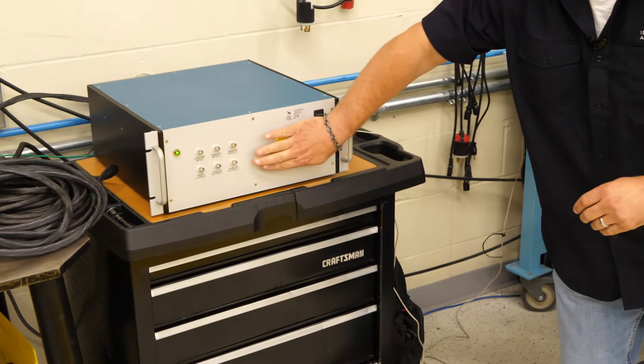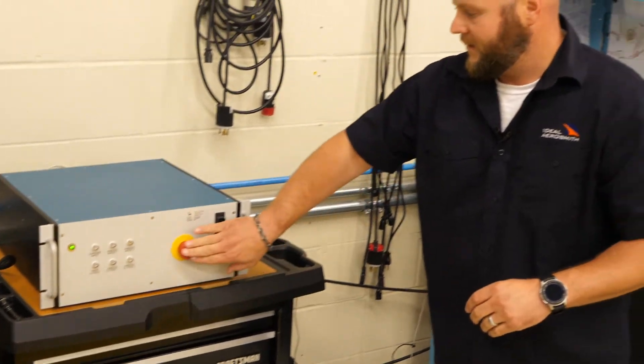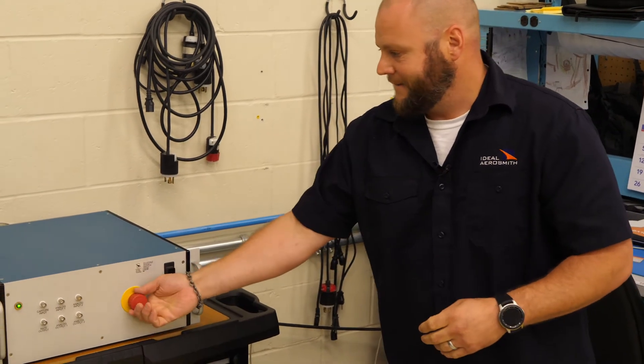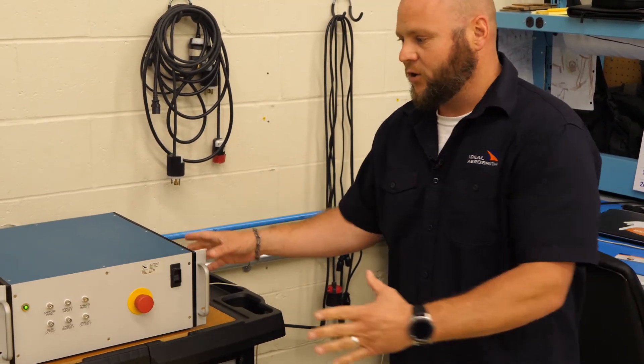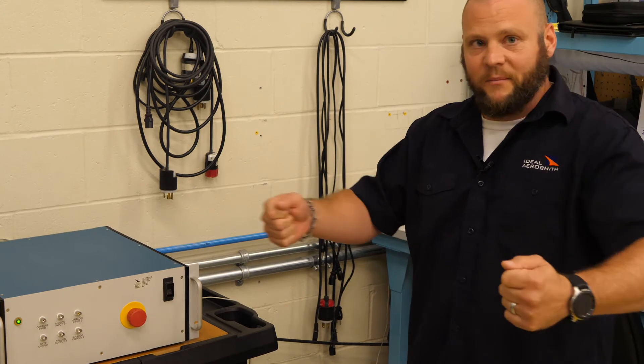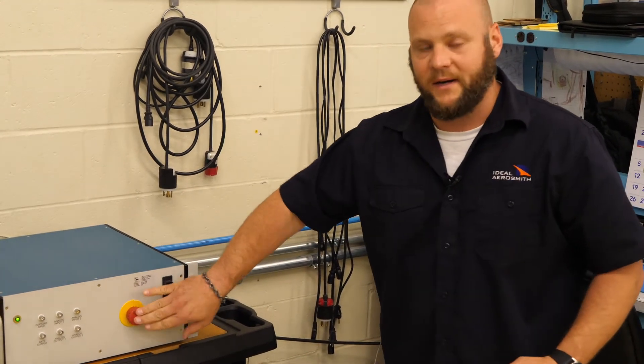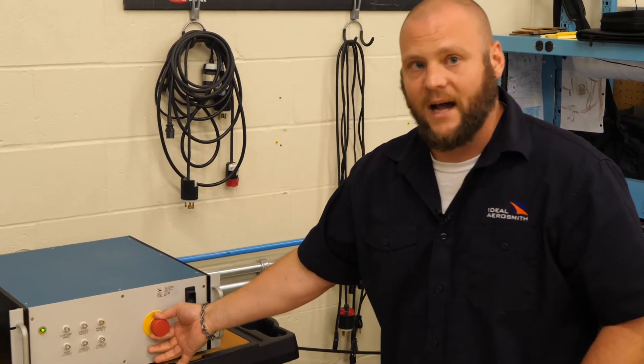So some things to look for is the emergency stop button. If this is depressed, you won't be able to release the brake or command a motion. Very possible that while uncrating this, someone picked it up and pressed it against their body and pressed that button in. So you want to make sure that that button is out.